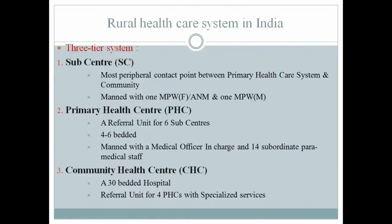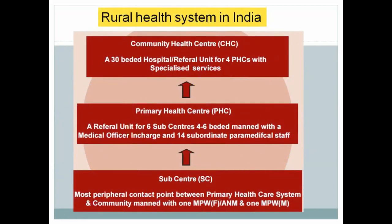The three-tier rural health system: Sub-centers are the most peripheral unit between the primary health care system and the community, staffed by one female multi-purpose worker and one male multi-purpose worker, providing very basic services. Primary health centers are a referral unit for six sub-centers, with four to six beds, a medical officer, and 14 paramedical staff. Community health centers are 30-bed referral units for four PHCs, offering many specialized services.